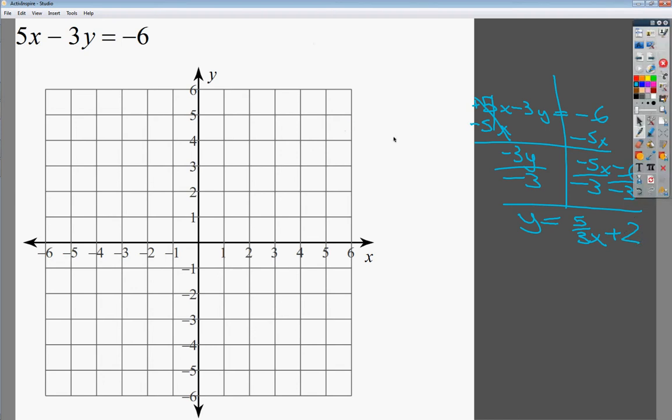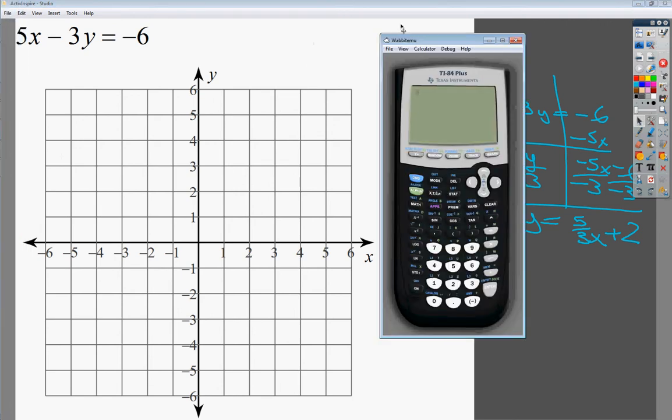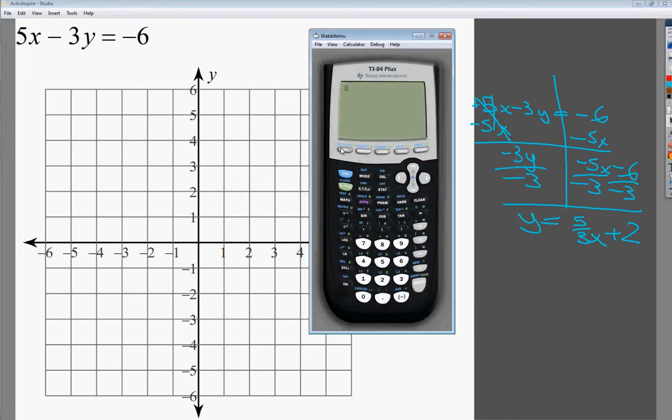So let me go into the calculator and type this one in, just so you could see how they look alike. Go to y equals. Clear all this out. I'm going to use the fraction menu. You could just do 5 divided by 3 if you want. And you hit graph. And it looks almost exactly like the one I had before. The only difference is the slope—the range of this graph is a lot bigger than the one here. So the slope looks a little weird, but it's the same graph.